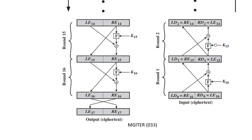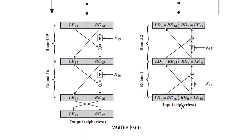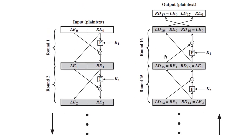Decryption is the reverse process of encryption. The input to the decryption process is the ciphertext. The process remains the same; the only difference between encryption and decryption in the Feistel cipher is that the keys are used in reverse order. For example, round 1 of decryption will use the key of round 16, and round 16 of decryption will use the key of round 1.